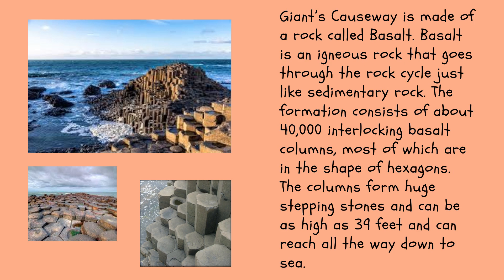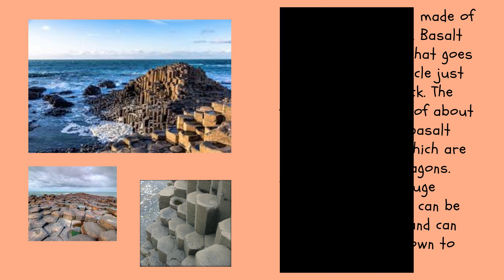Giant's Causeway is made of a rock called basalt. Basalt is an igneous rock that goes through the rock cycle just like sedimentary rock. The formation consists of about 40,000 interlocking basalt columns, most of which are in the shape of hexagons. The columns form huge stepping stones and can be as high as 39 feet, reaching all the way down to sea.